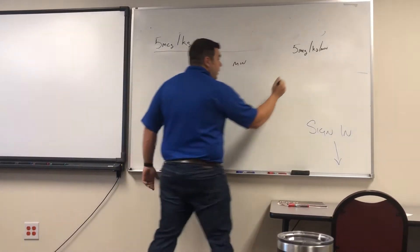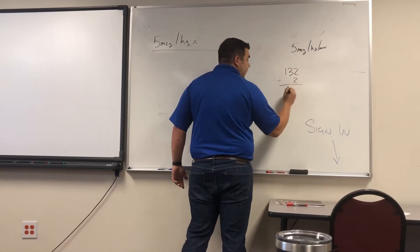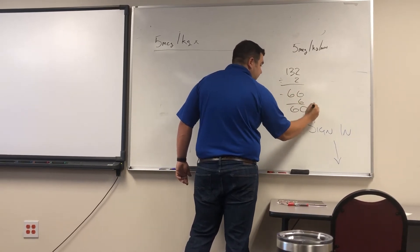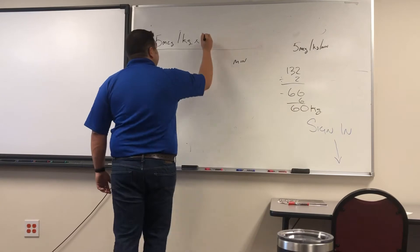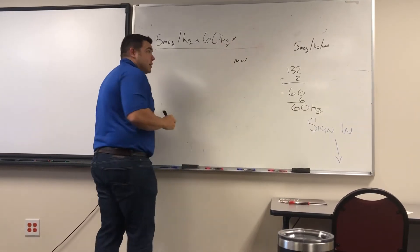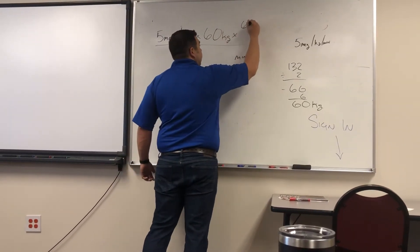60, exactly. 132 divided by two is 66 minus 10%, which is the first number, 60. 60 kilograms. And you guys know what solution set we're going to use? A 60 drop set, very good. Micro, micro.